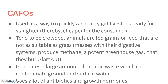CAFOs are very crowded. The animals are fed grains because it fattens them up, but their digestive system is not designed for that — they are designed to eat grass. That's why they produce so much methane; they get all messed up digestively and burp or fart it out. Methane is 20 times worse per molecule than carbon dioxide, so it's a significant issue.